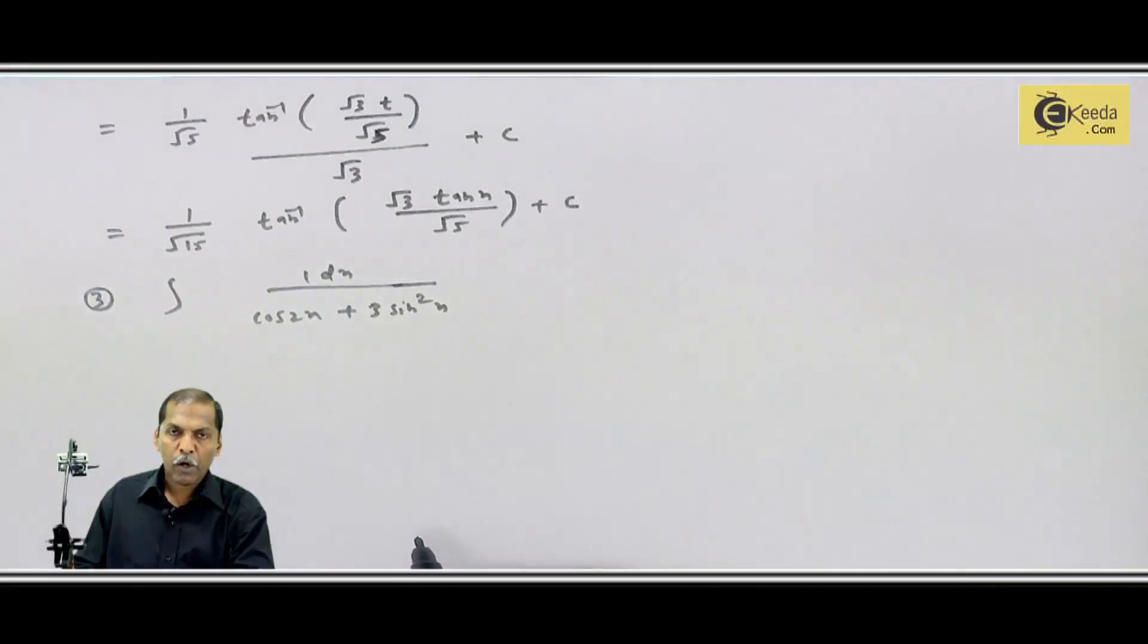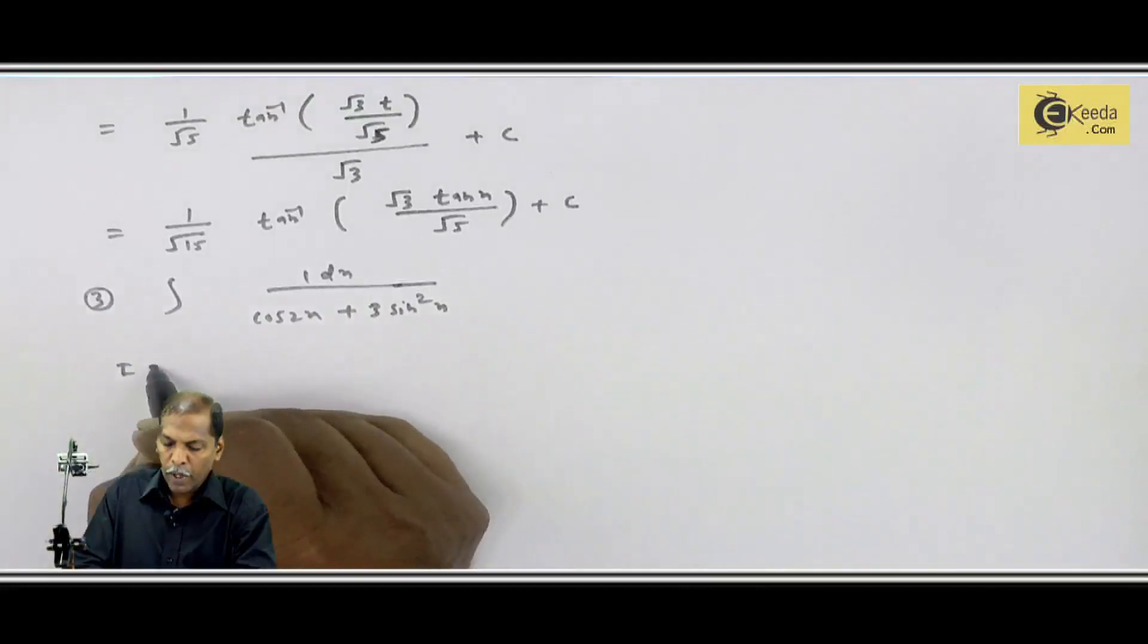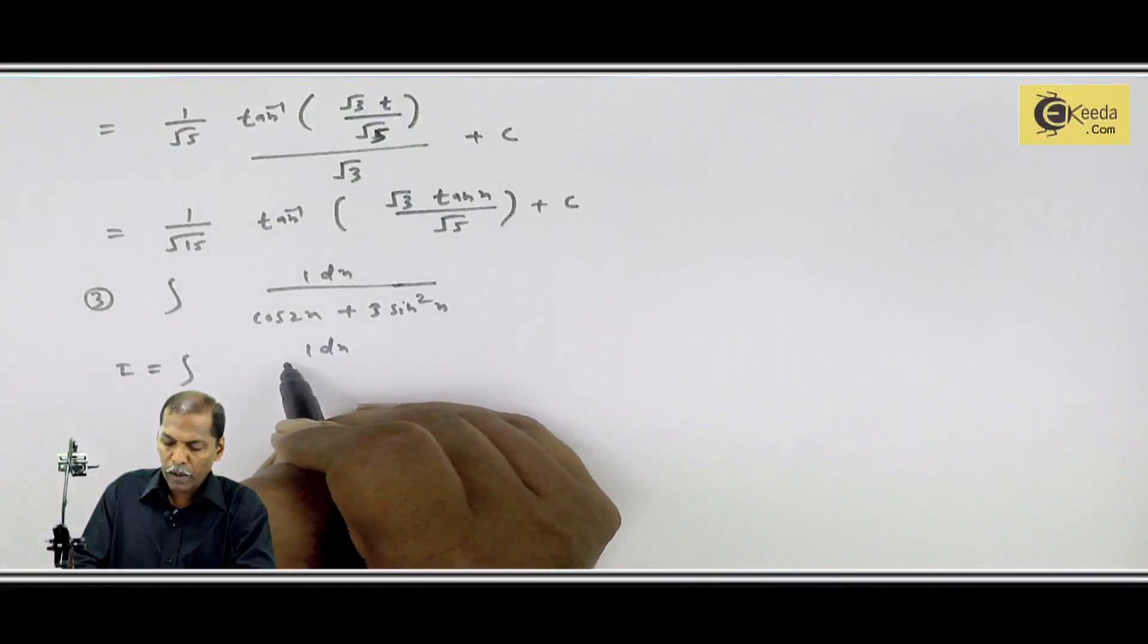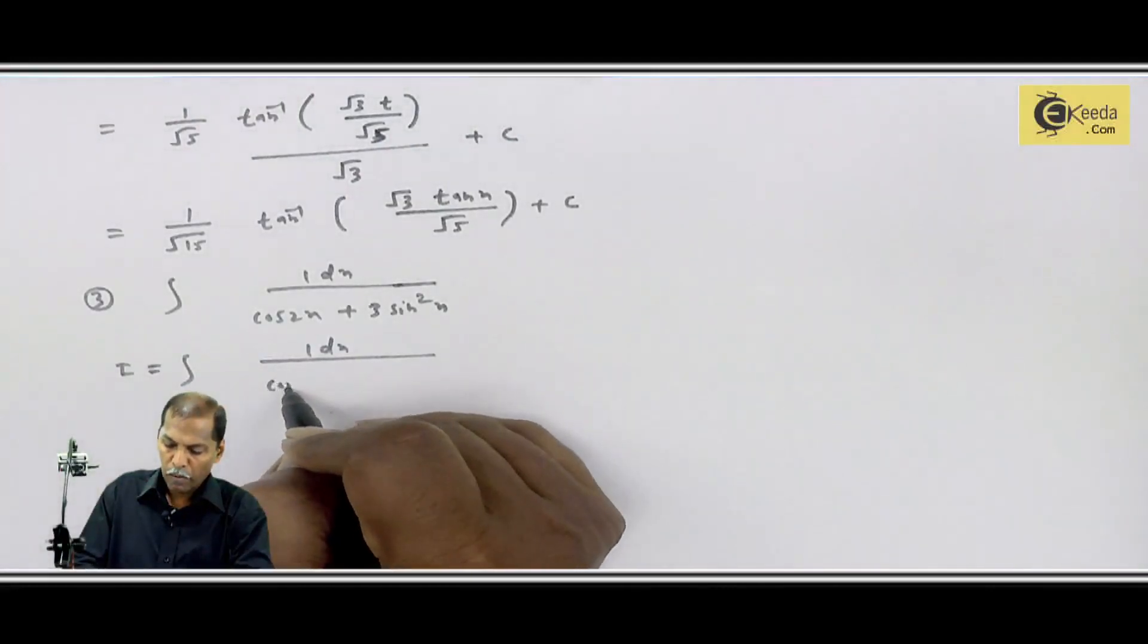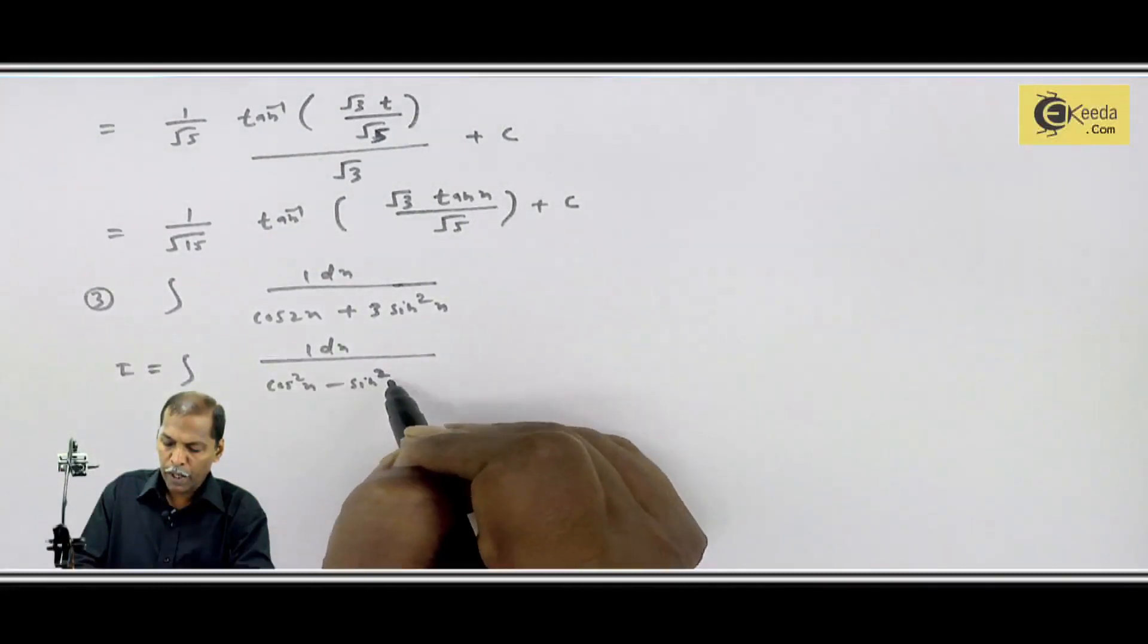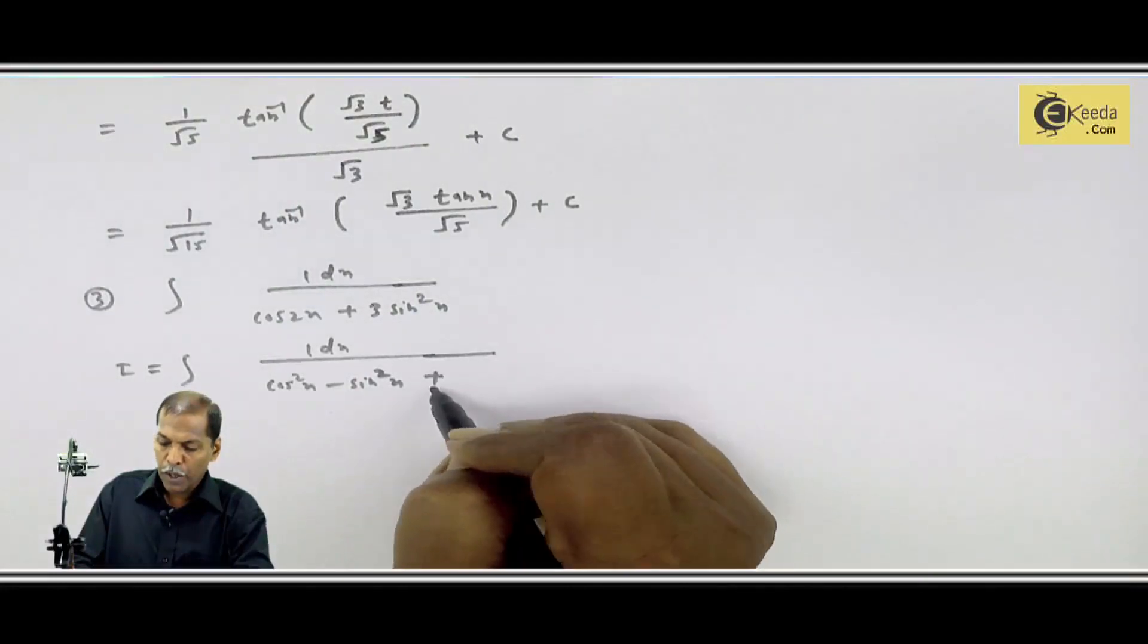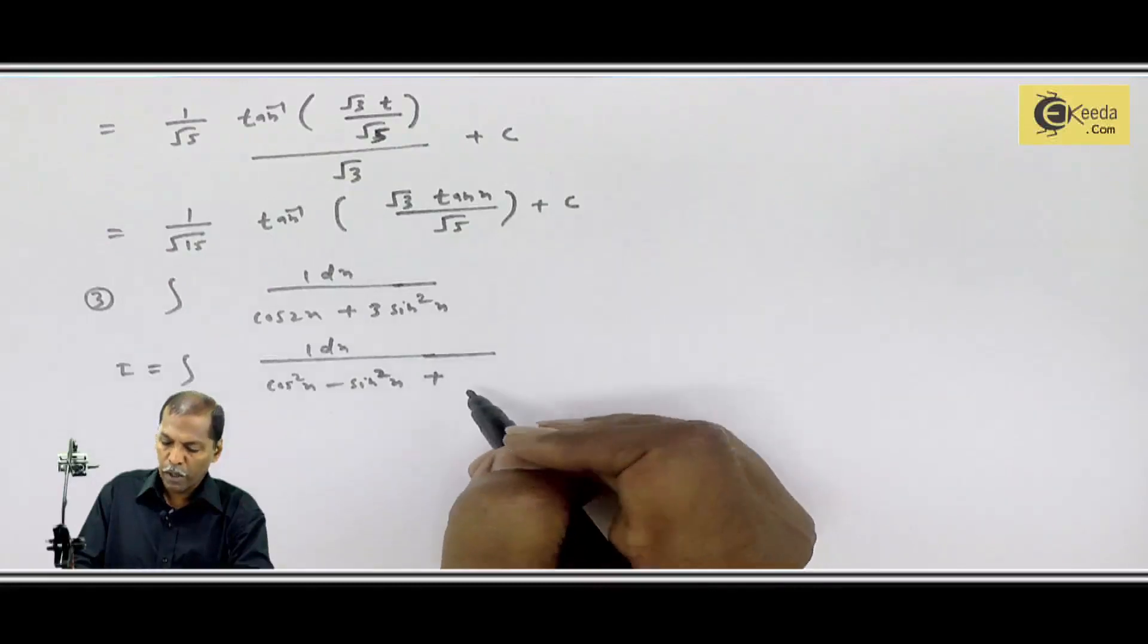What do we do here? Cos 2 theta formula apply first. So I equal to integral 1dx, cos 2x replace cos square x minus sin square x. This is cos 2x formula plus second term 3 sin square x we write as it is, plus 3 sin square x.